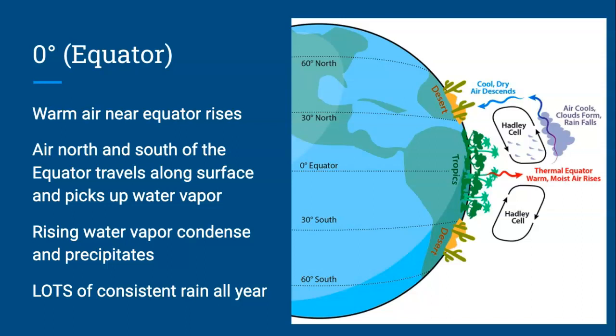So air that is full of water vapor rises above the equator. And as we know, the air rises, cools in the atmosphere, condenses, and rains. So directly over the equator, you have areas with consistent or constant rainfall all year long.